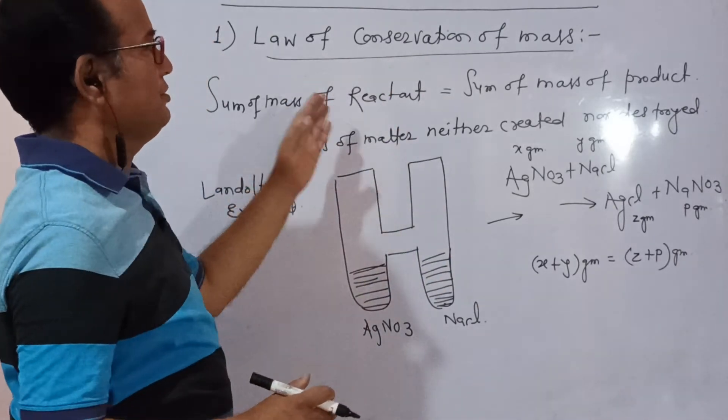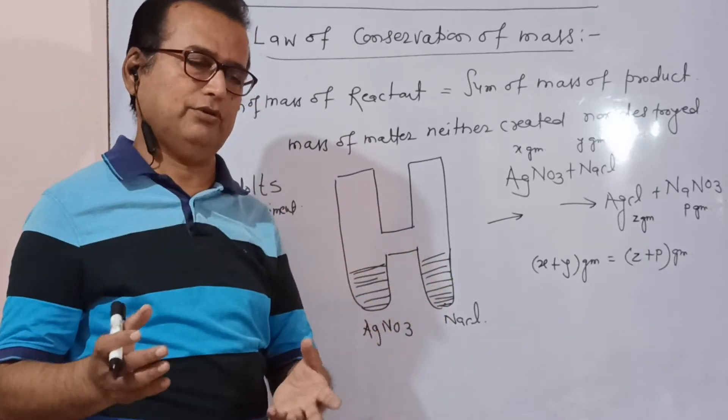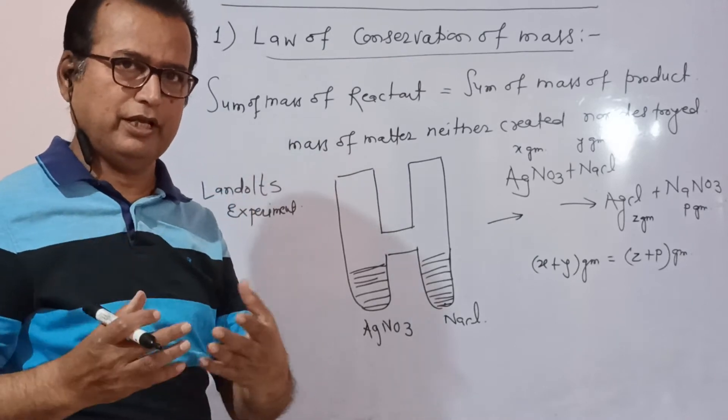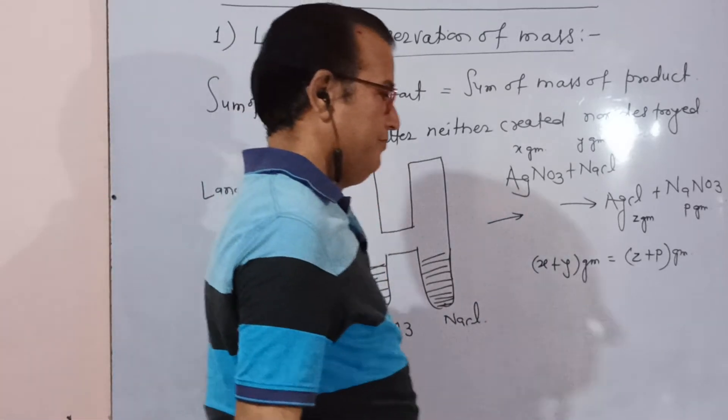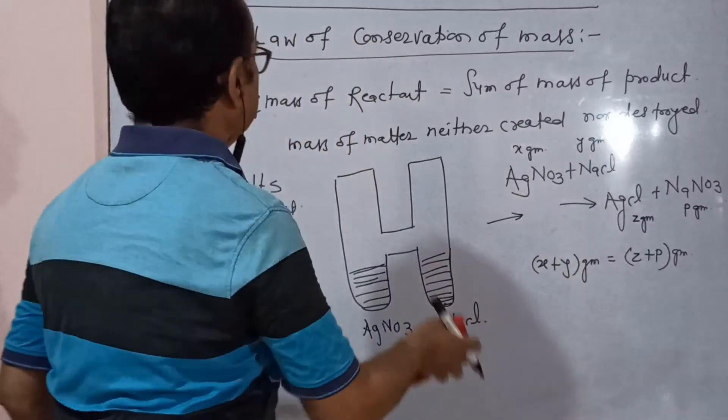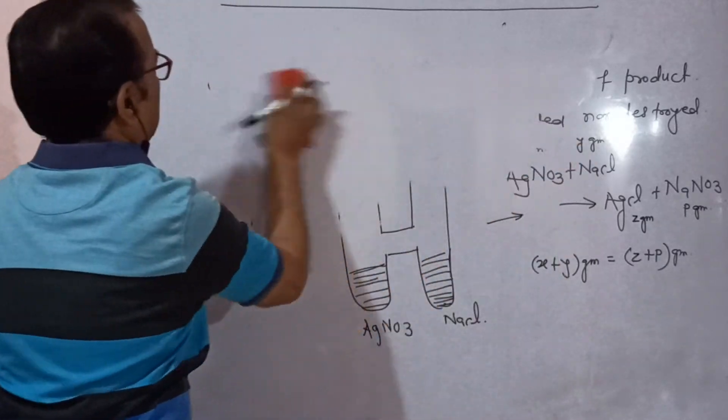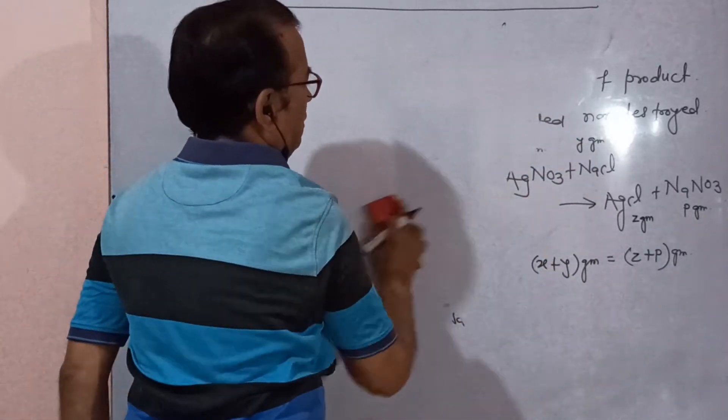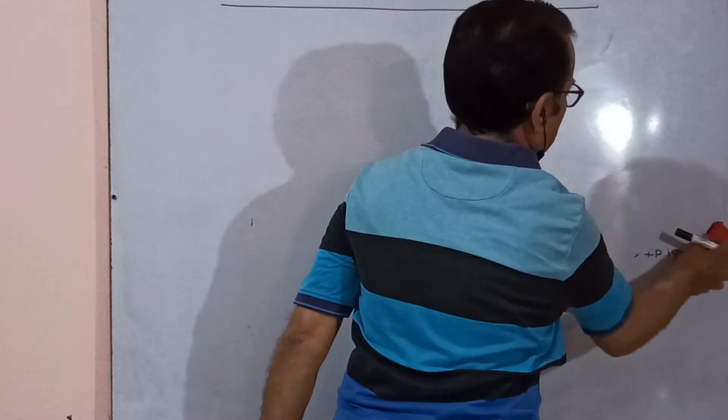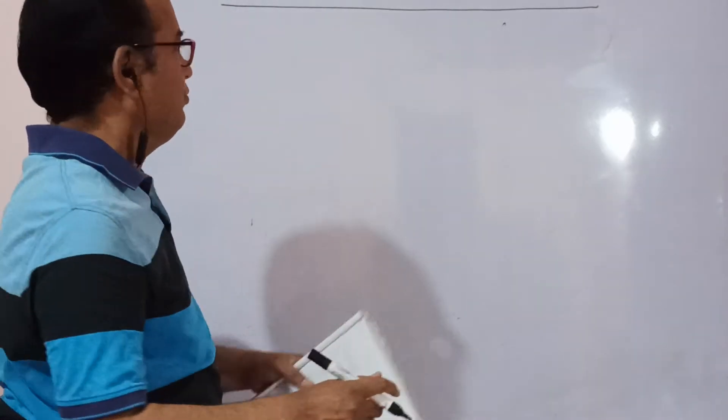Example. The first law - mass neither created nor destroyed. Mass is conserved. Example: find the mass of CO2 produced.